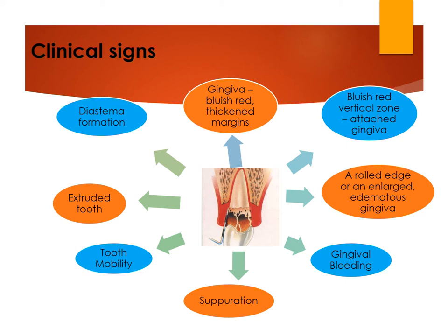The clinical signs of periodontal pockets: the most important is that the gingiva appears bluish-red, mainly seen in the established lesion. There will be thickened, rolled-out margins, and this bluish-red vertical zone can extend to the attached gingiva. There will be enlargement of the gingiva, bleeding on probing, and sometimes separation. When the pocket reaches the bone level and there is bone loss, it leads to tooth mobility and extrusion of teeth. Sometimes pathological migration also occurs, leading to diastema formation.